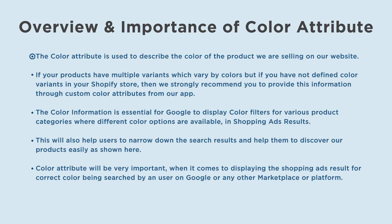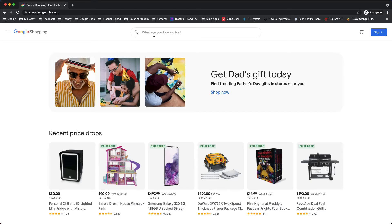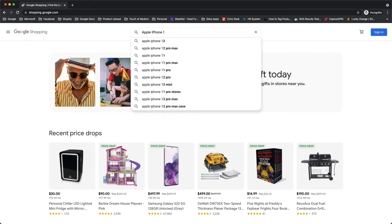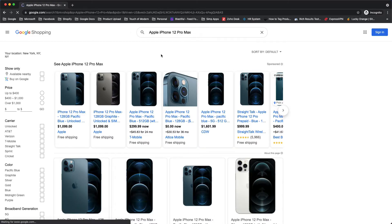The color attribute is used to describe the color of the product we are selling on our website. If your products have multiple variants which vary by colors, but you have not defined color variants in your Shopify store, then we strongly recommend you to provide this information through custom color attributes from our app. The color information is essential for Google to display color filters for various product categories where different color options are available in shopping ads results.